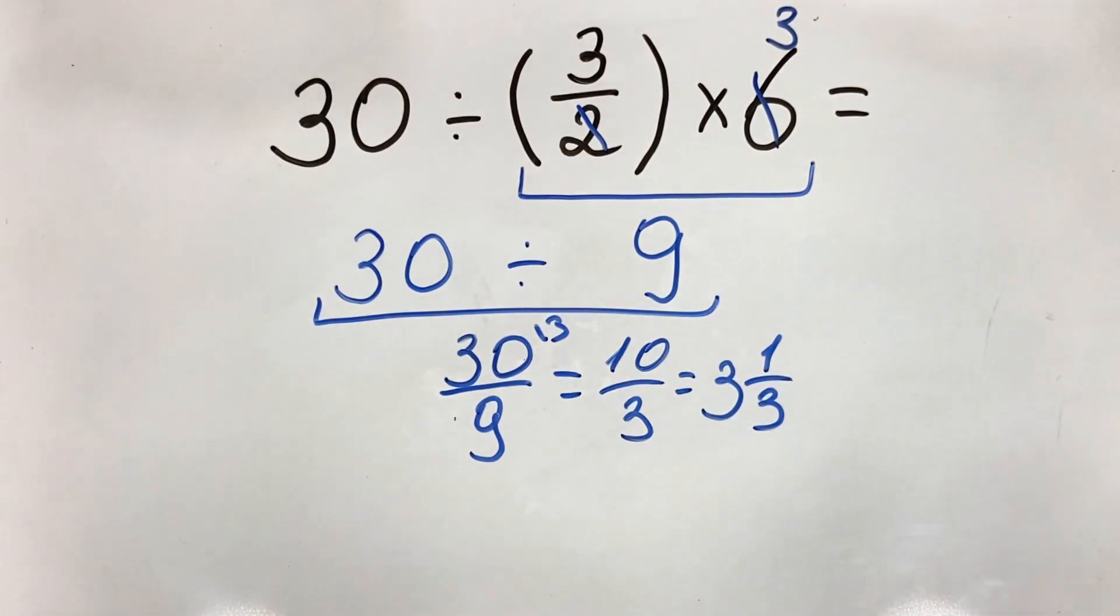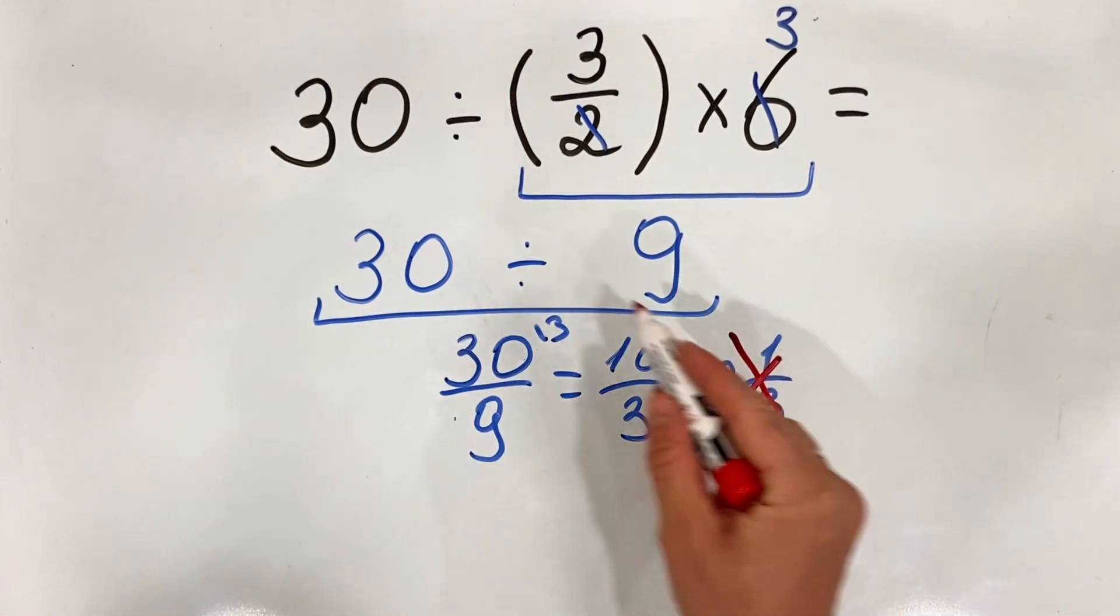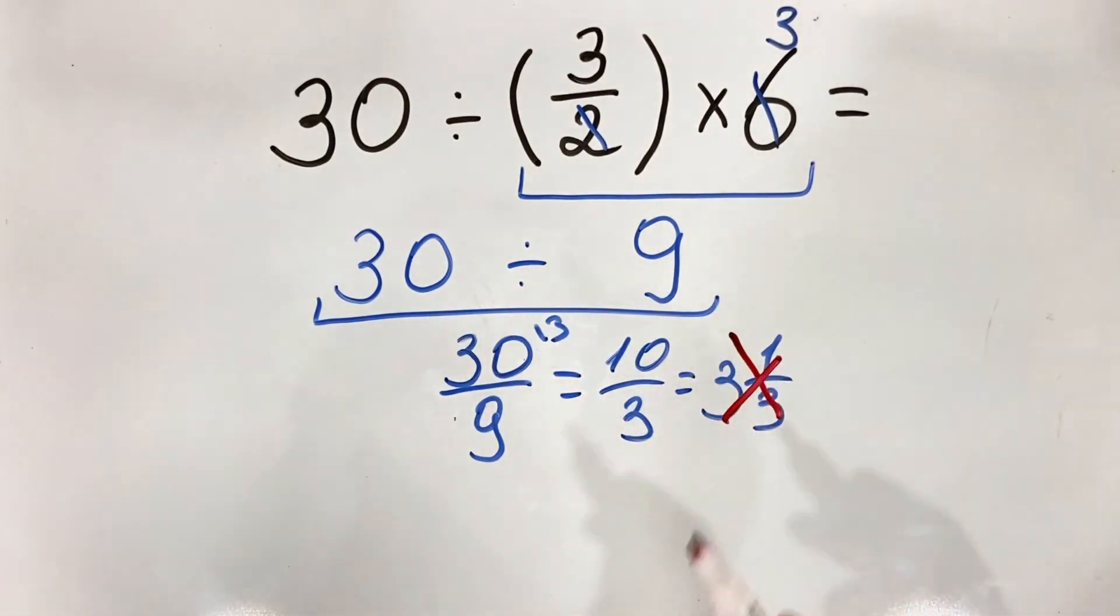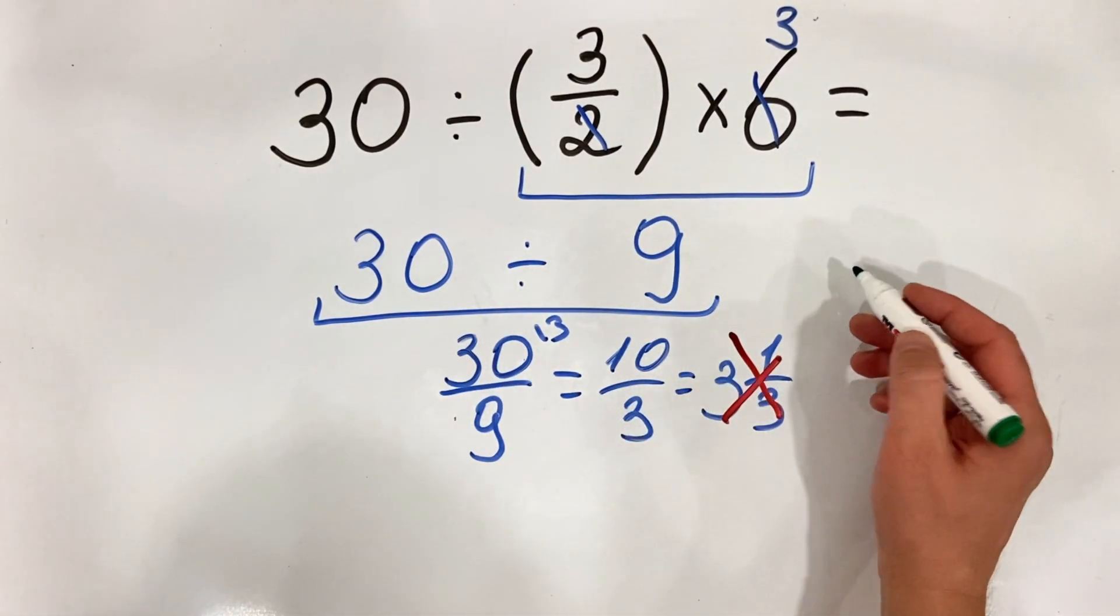and 1 third. But this answer and this approach is not correct. Why? Because according to the order of operations,